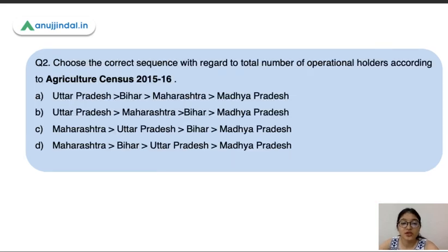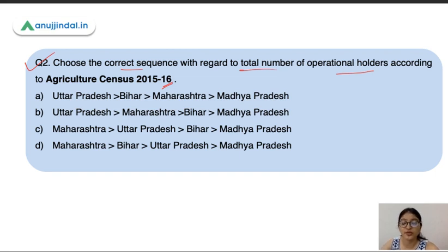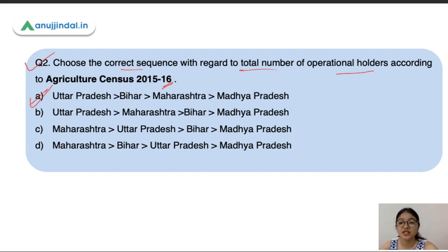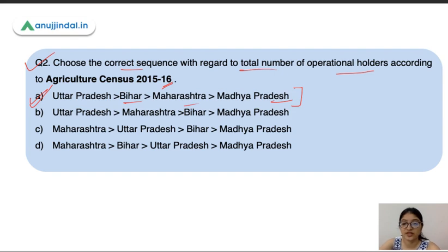Question 2: Choose the correct sequence with regard to the total number of Operational Holders as per Agriculture Census 2015-16 — which state has the largest number of Operational Holders? The correct sequence is: Uttar Pradesh has the largest number of Operational Holders, followed by Bihar, Maharashtra, and Madhya Pradesh. Remember this sequence — it is very important.